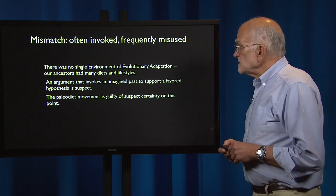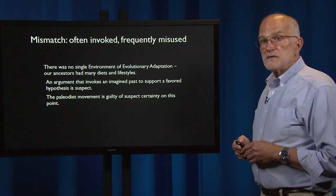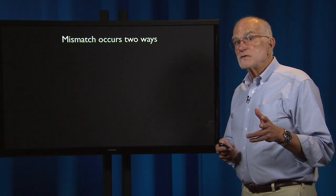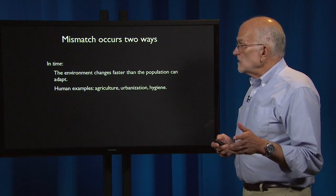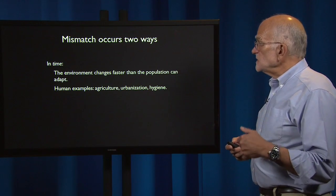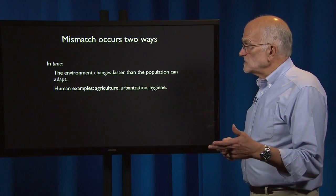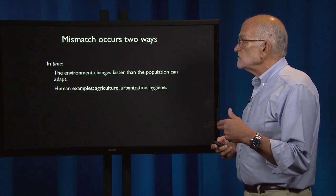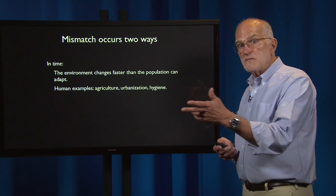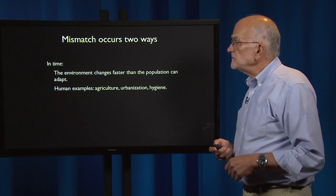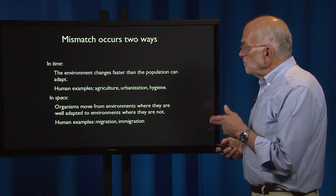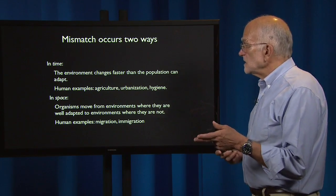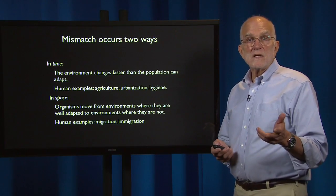The paleo diet movement is guilty of suspect certainty on this point. However, mismatch is real and it occurs in two ways. In time, the environment is changing faster than the population can adapt — human examples include the agricultural revolution, urbanization, and hygiene, all producing mismatch to evolved biology. And in space, organisms can move from environments where they were well adapted to environments where they're not, and the human examples would be migration and immigration.